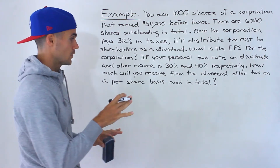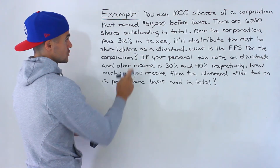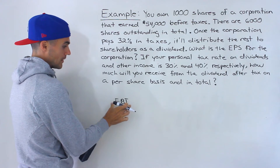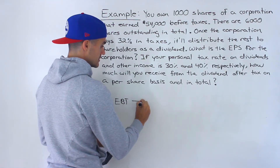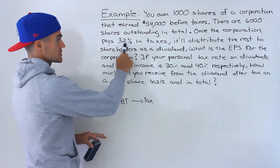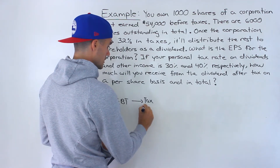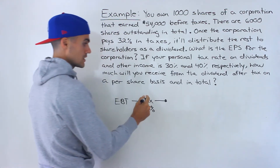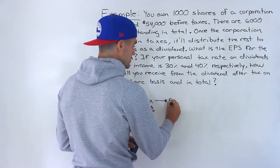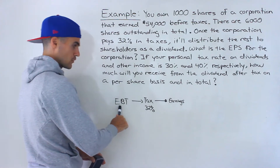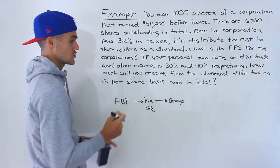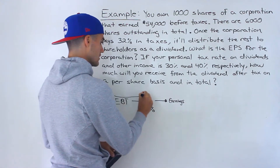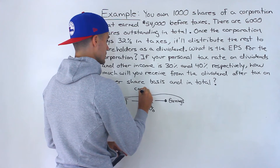I want to show you from a high level what's happening. We're starting with the corporation — there's earnings before taxes. Then what happens is this corporation has to pay tax at 32%. After that, the corporation will have net income, or earnings. So earnings before taxes, then taxes are paid, and then the corporation has earnings or net income. This is all from the income statement of the corporation — this entire portion is at the corporate level.